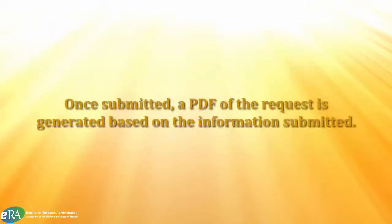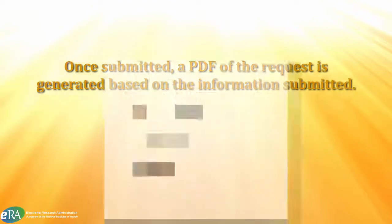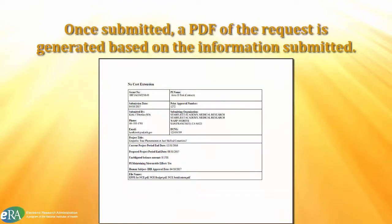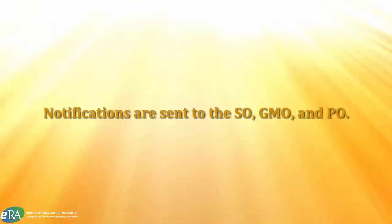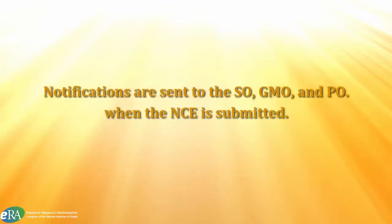Once the request has been submitted, a PDF document is generated based on the request submitted. This PDF document can be viewed in the Search for Request tab. A notification is sent to the ISO, GMO, and PO of the grant when the no-cost extension request is submitted to NIH.